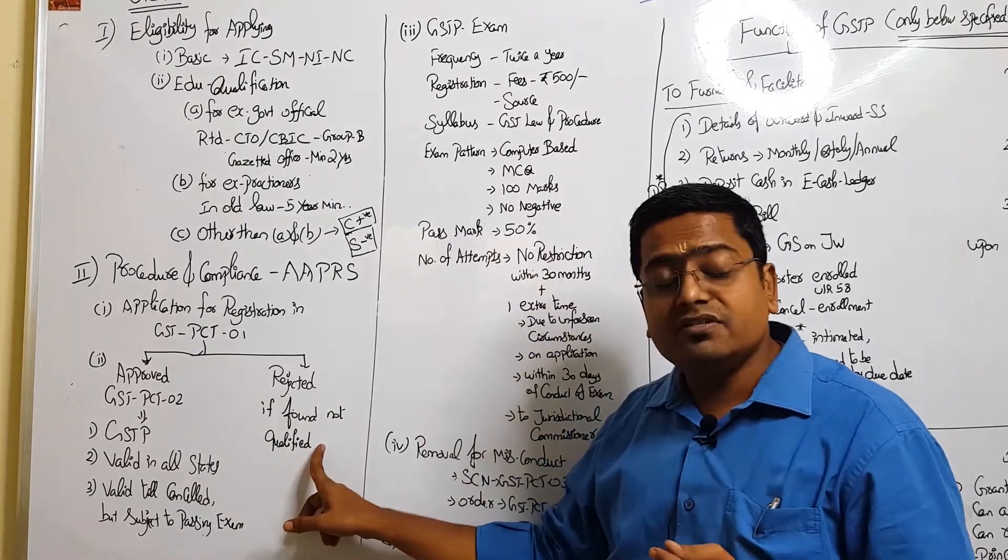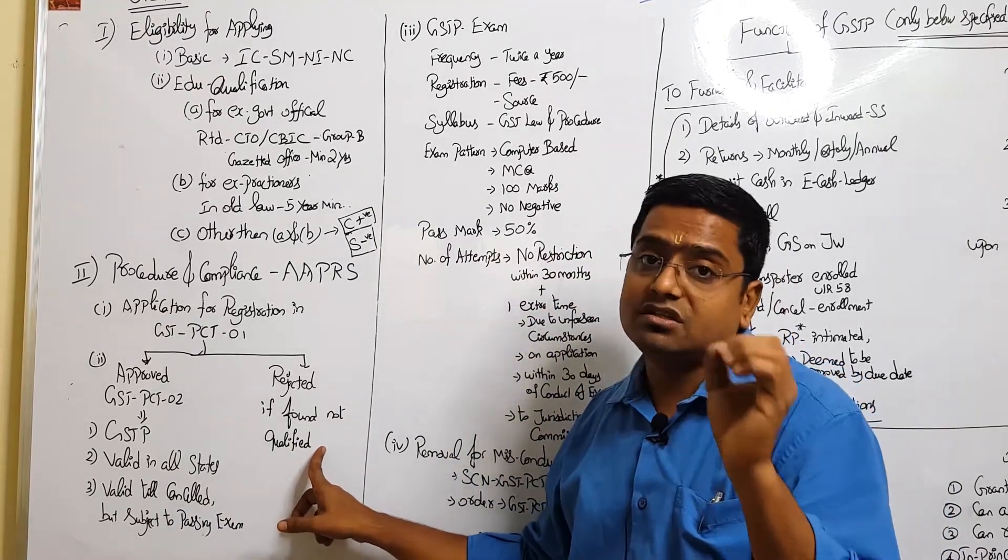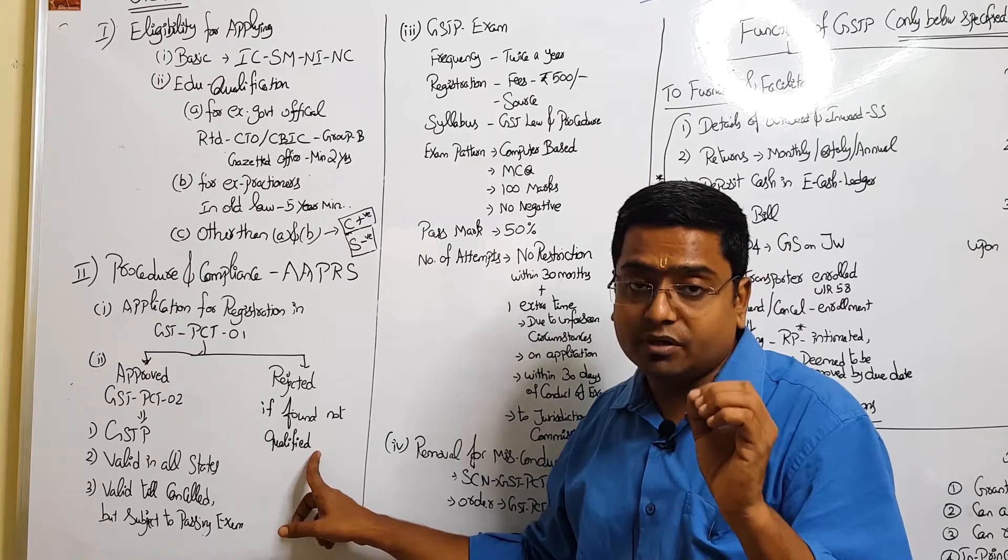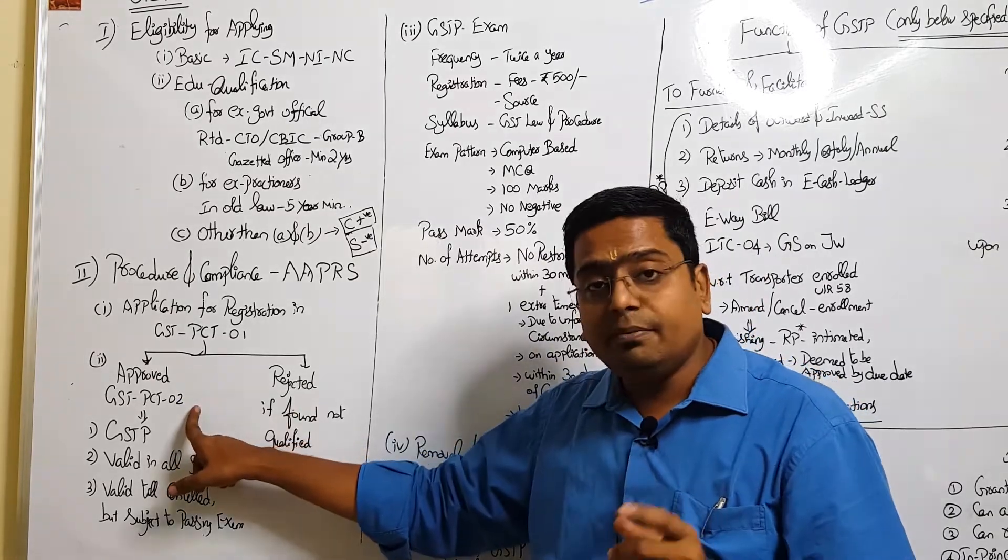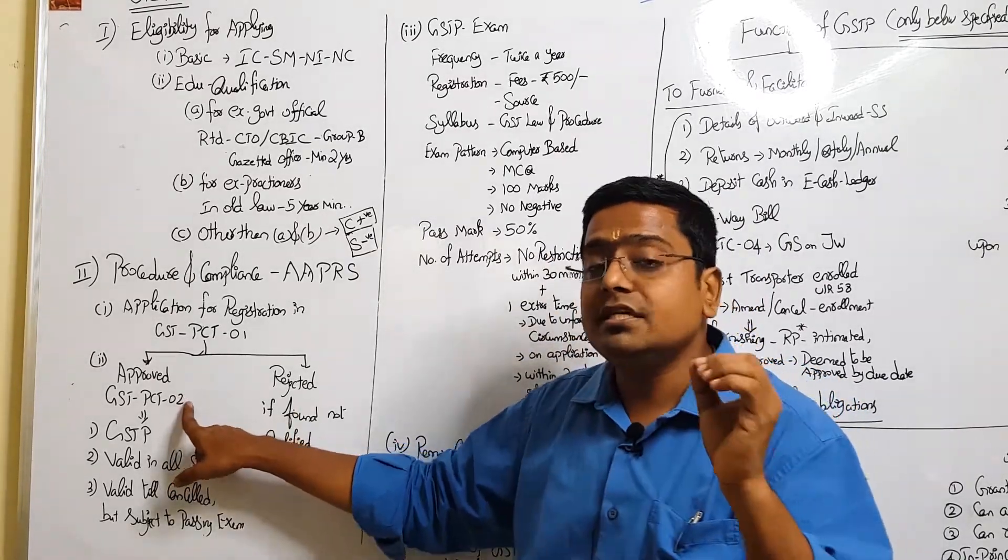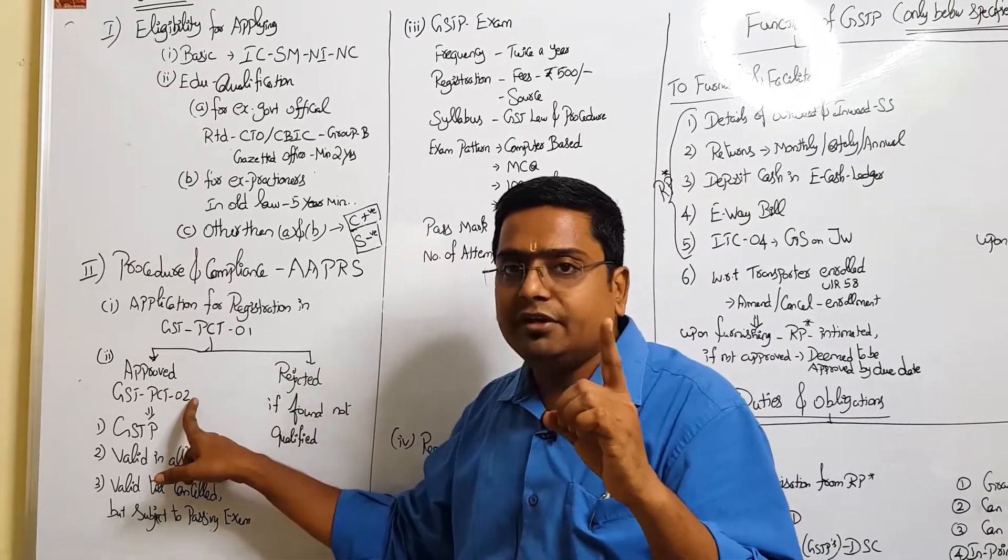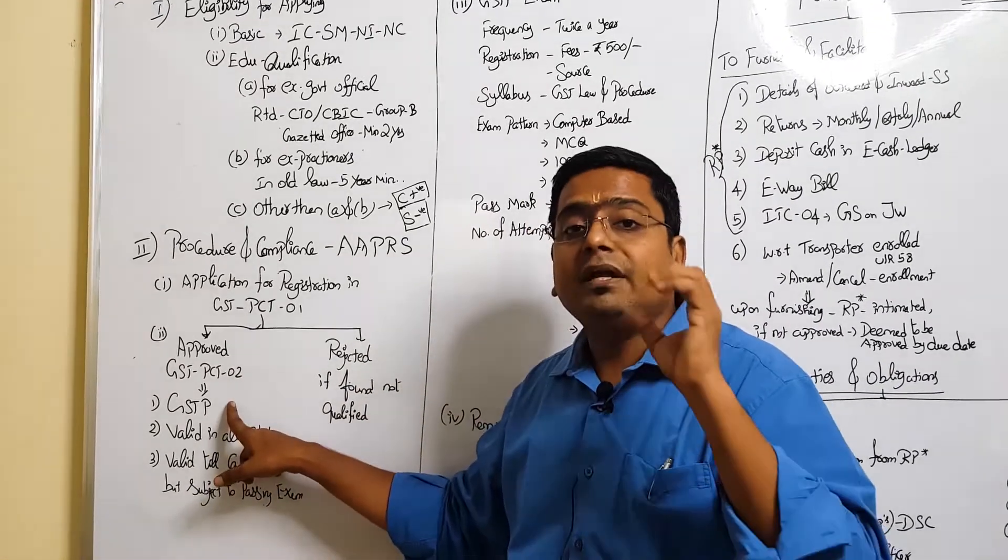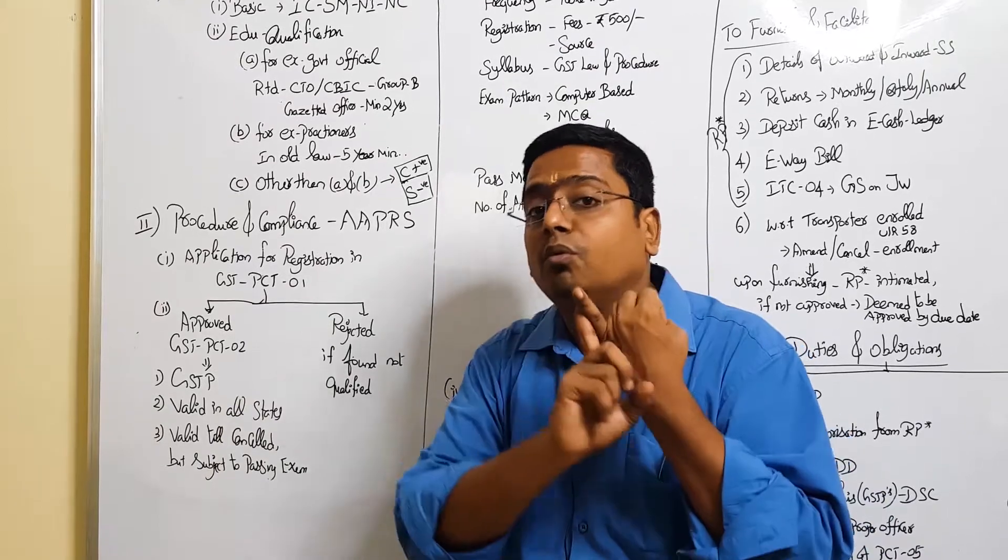A proper officer can approve this or he can reject this. On what grounds may they reject? If the proper officer believes that the qualification is not sufficient or it is improper qualification, he can reject. But if he is approving, he will make an approval order in PCT-02.